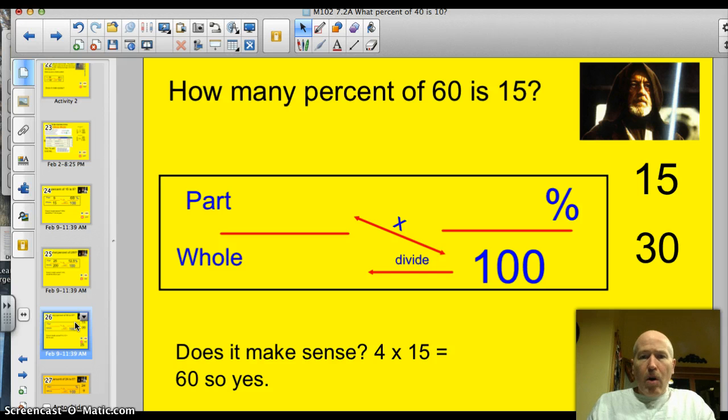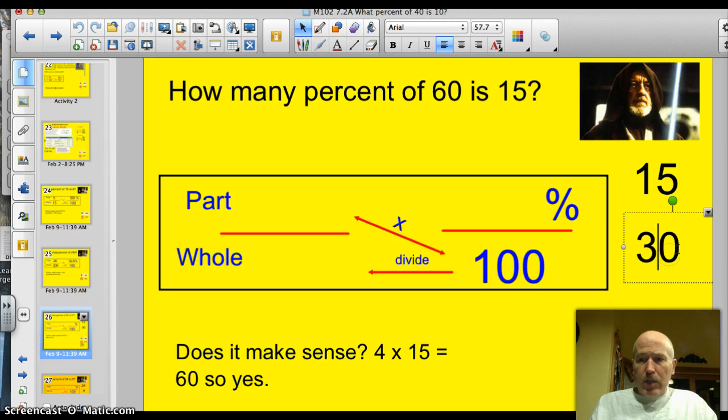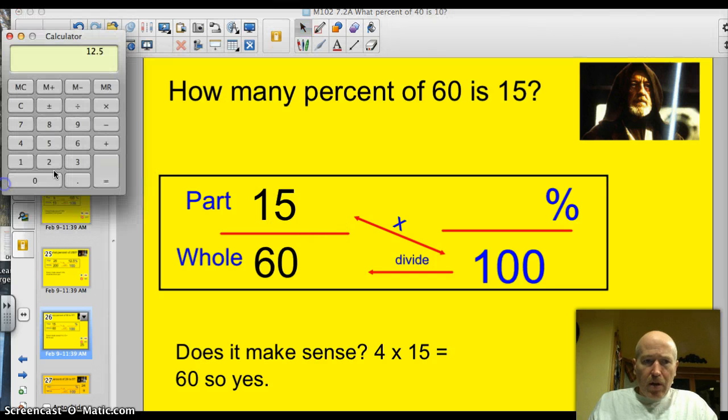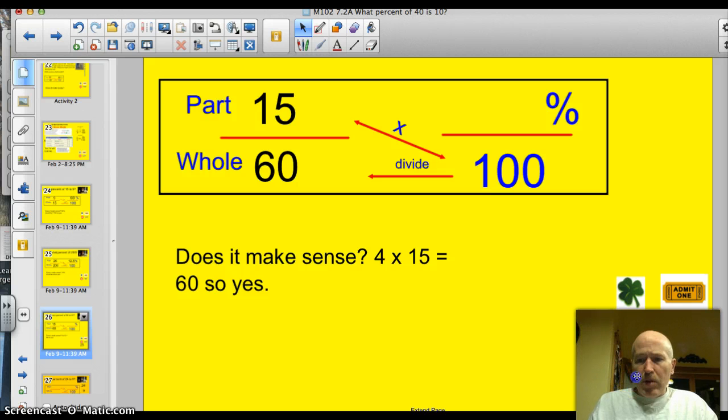How many percent of 60 is 15? My part is 15 because that's the smaller number. So 60 is the whole. So now I've got 15 sixtieths. Let's get my calculator out. That's 1,500, right? 1,500 because it's 15 times 100. Now I just have to divide by 60. Divide by 60 equals 25%.